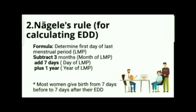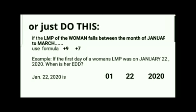That gives you her EDC or EDD. Take note that most women give birth 7 days before to 7 days after their computed EDD. The formula to remember for Nagel's Rule is: minus 3 (month), plus 7 (day), plus 1 (year).